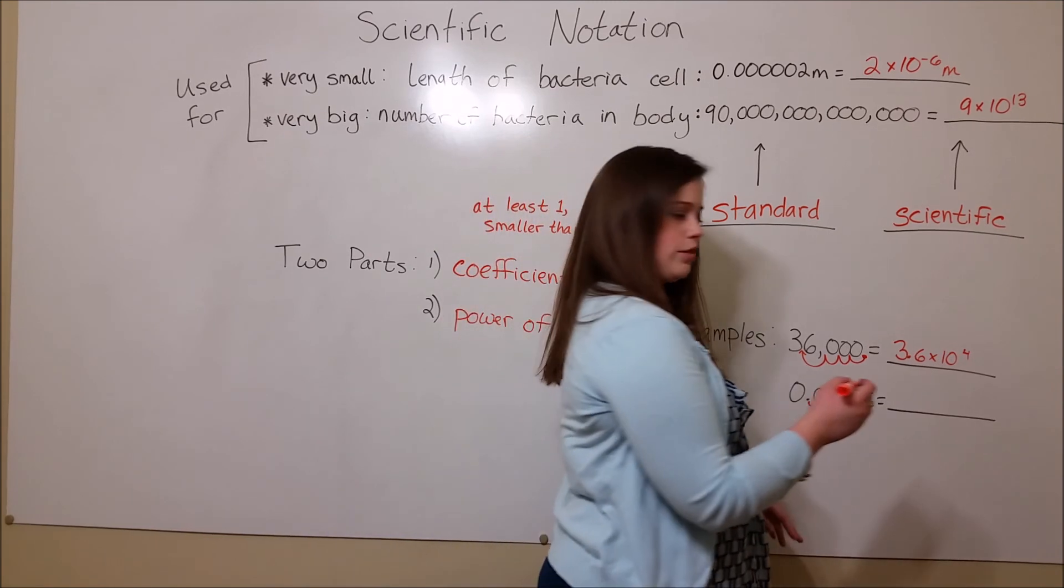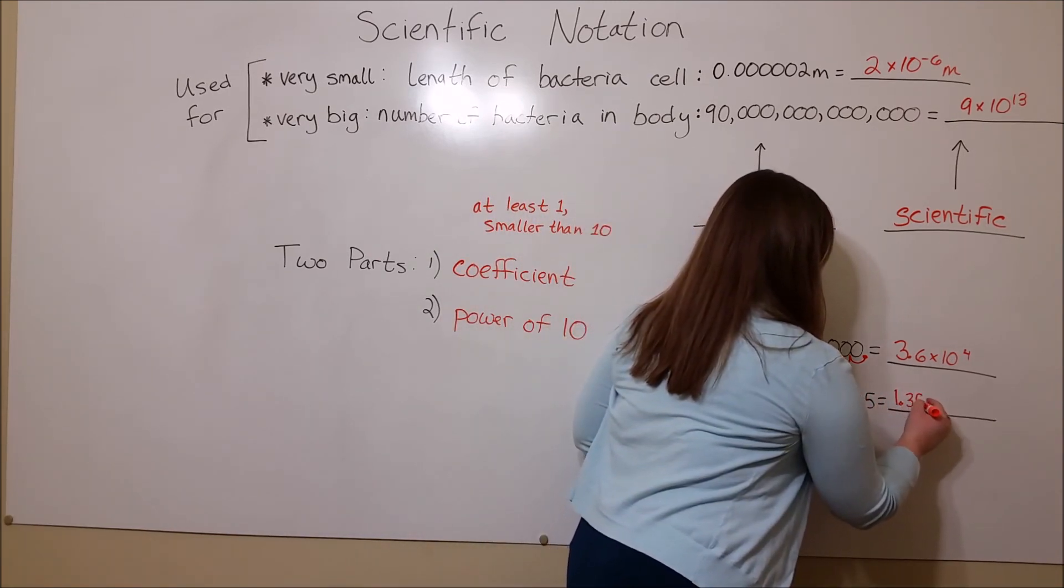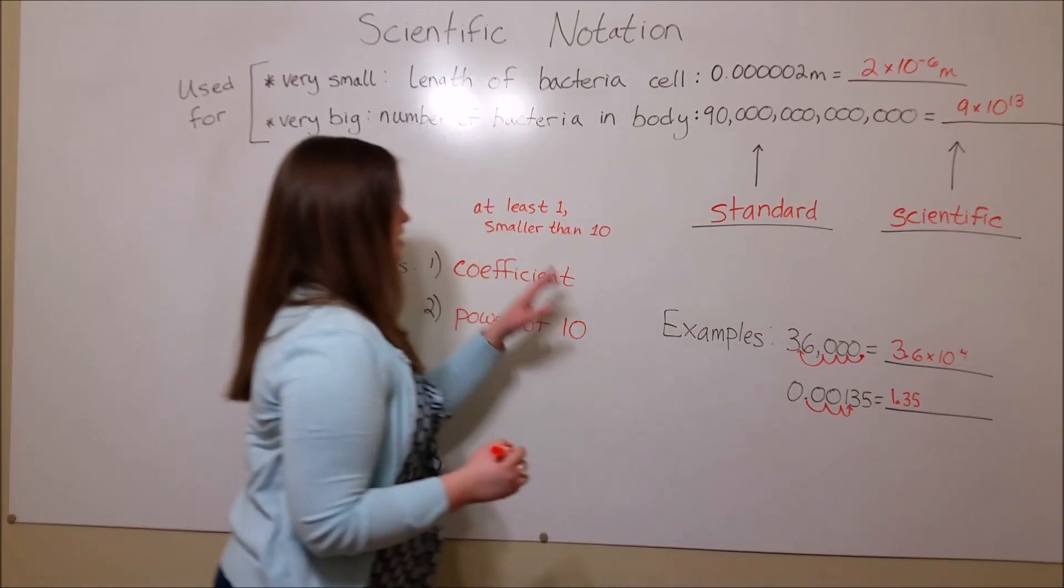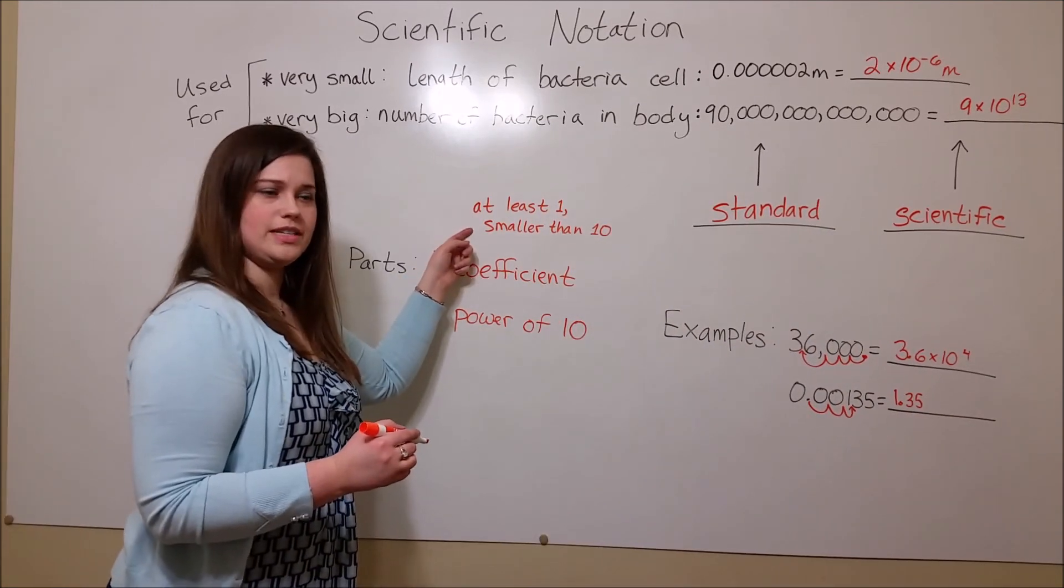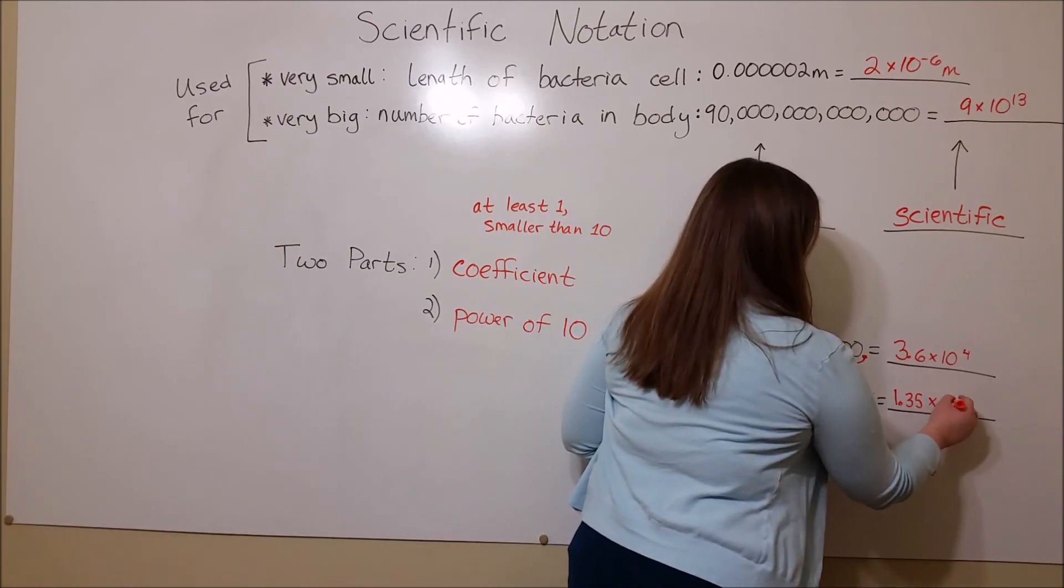Three places, and our coefficient becomes 1.35. And again, that coefficient is at least 1, but smaller than 10. And now it's time for our power of 10. We write times 10.